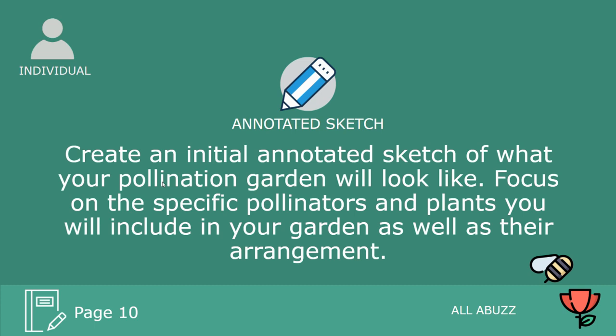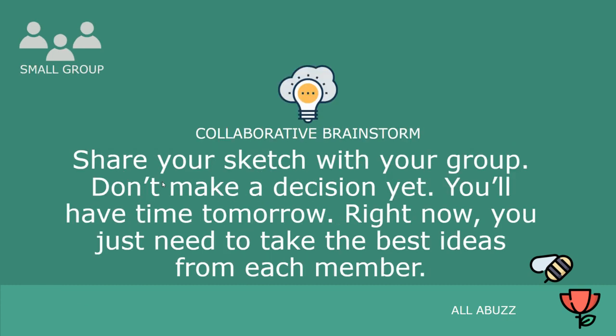Now you'll do an initial sketch — this is what your pollinator garden will look like. It doesn't have to be perfect; you can represent plants with circles, squares, or X's. Just show me the dimensions: is your garden square, circular, around a tree? Sketch out the dimensions and your arrangement — for example, rose bushes on one side, lilacs on another, annuals in the middle. Make sure you have a key or labels identifying each plant.